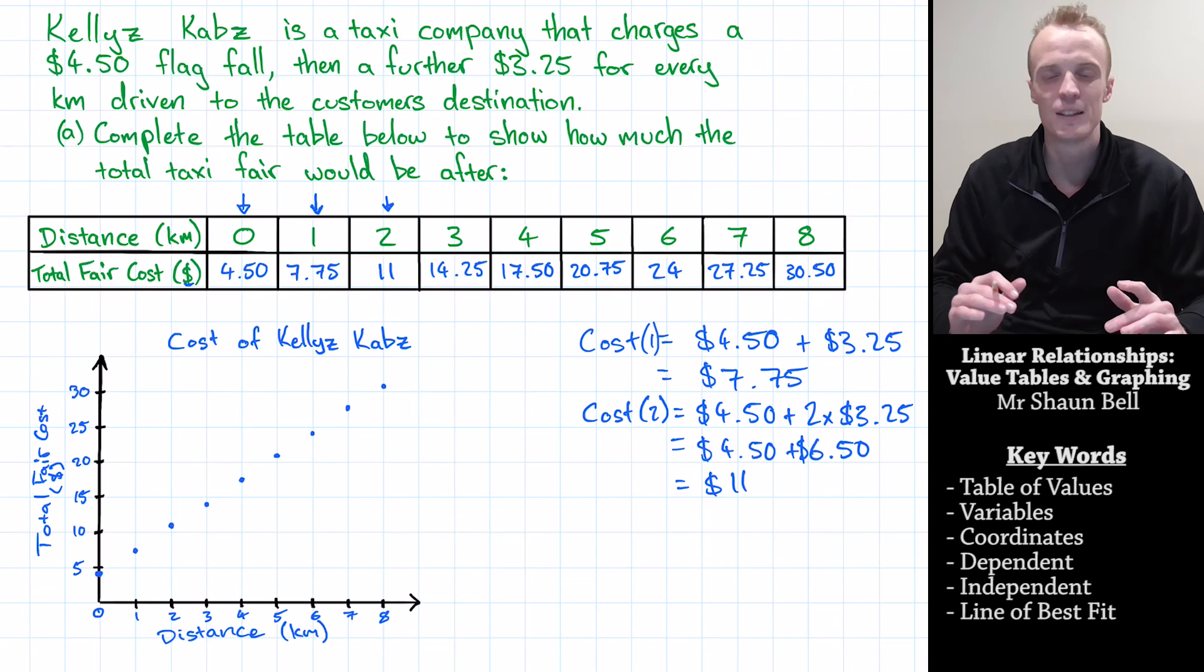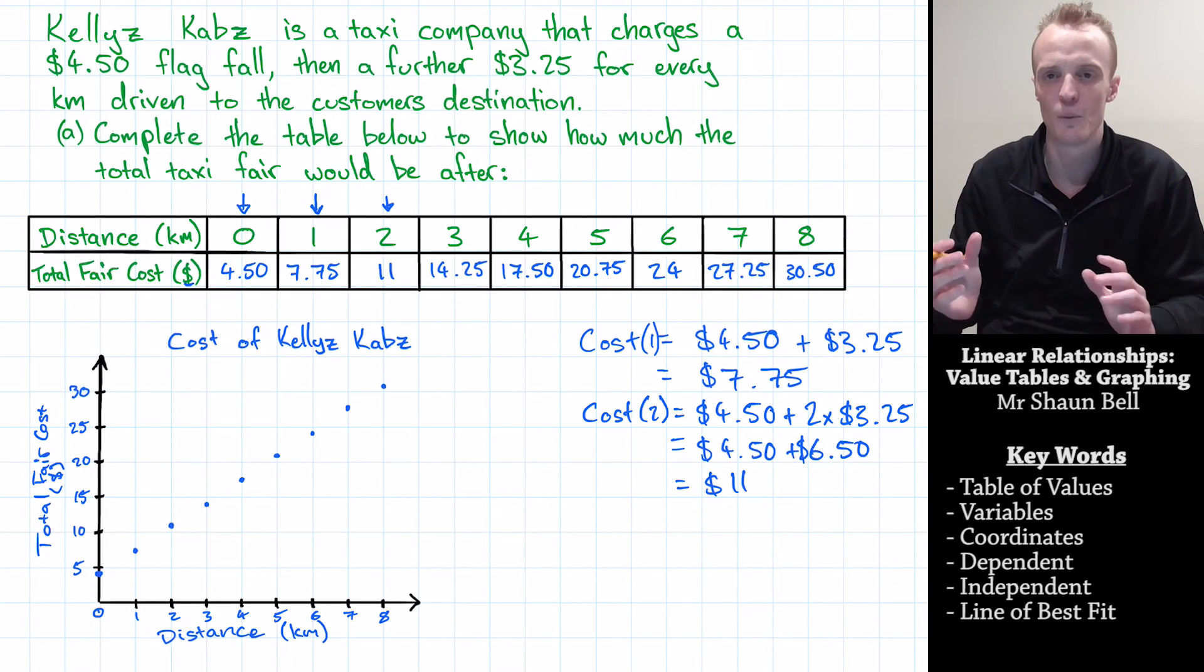Now we've done this, you'll notice that we've got this straight line relationship occurring, which we refer to as a linear relationship. Linear, meaning straight. But what we can now do is put what's known as a line of best fit. A line of best fit is just a straight line here, that's not playing connect the dots. It's just one straight line, the best fits the data that we have.